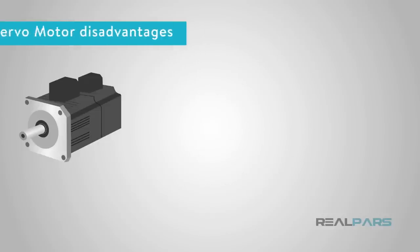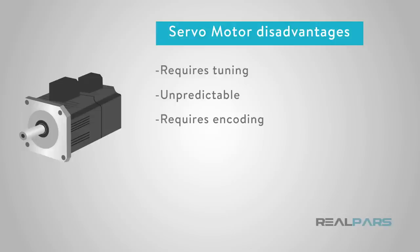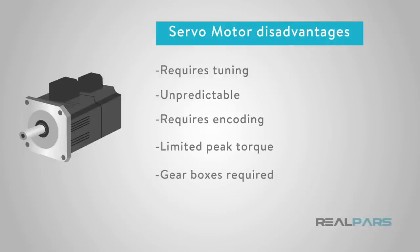The top servo motor disadvantages are: servo motors require tuning to stabilize the feedback loop; servo motors will become unpredictable when something breaks, so safety circuits are required; complex controller requires encoder and electronic support; peak torque is limited to a 1% duty cycle and servo motors can be damaged by sustained overload; gearboxes are often required to deliver power at higher speeds; and higher overall cost — the installation cost of a servo motor system may be higher than that of a stepper motor due to the requirement for feedback components.